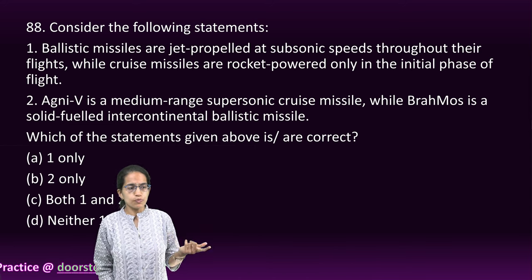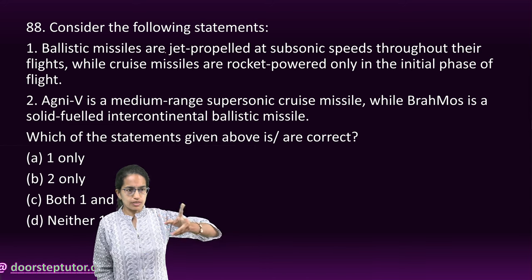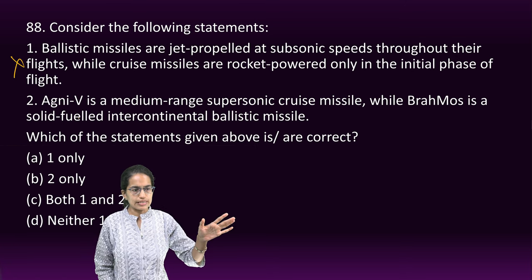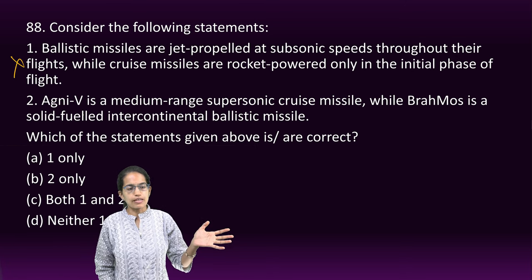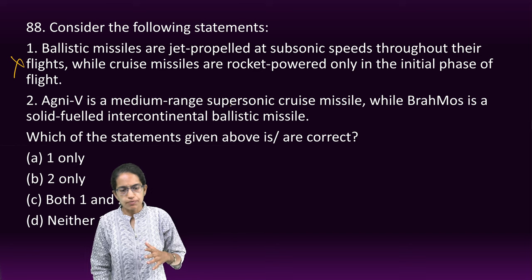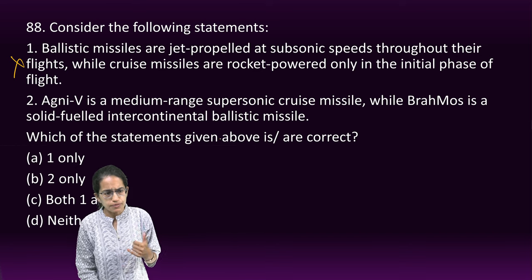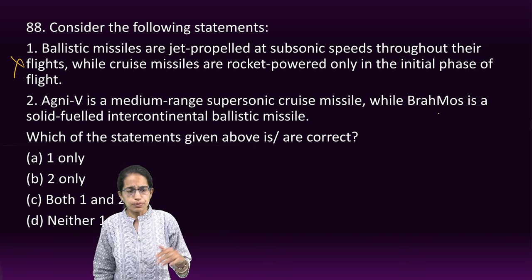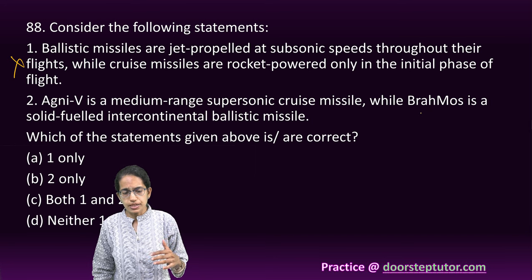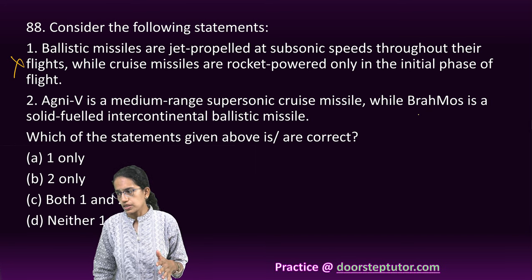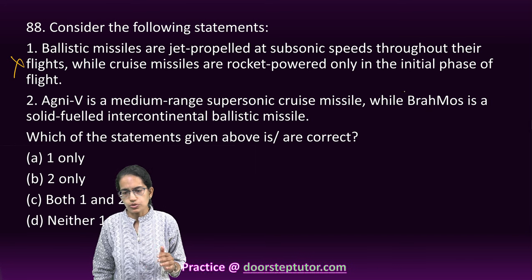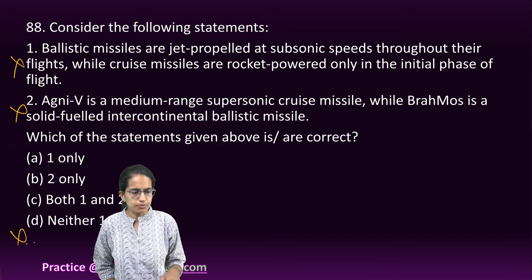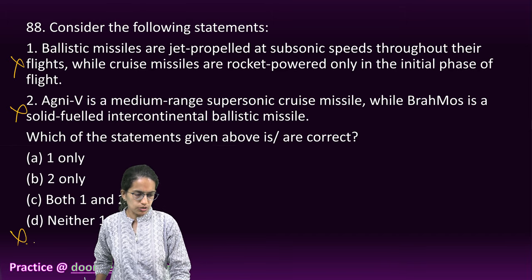Statement 1 is incorrect. Agni-5 is not a medium-range supersonic missile — it is an intercontinental ballistic missile. BrahMos is the medium-range supersonic missile that has been developed jointly. The choices have been interchanged, so neither option presented is correct.